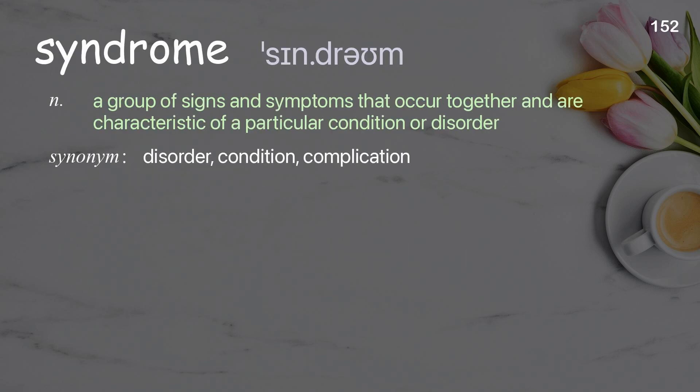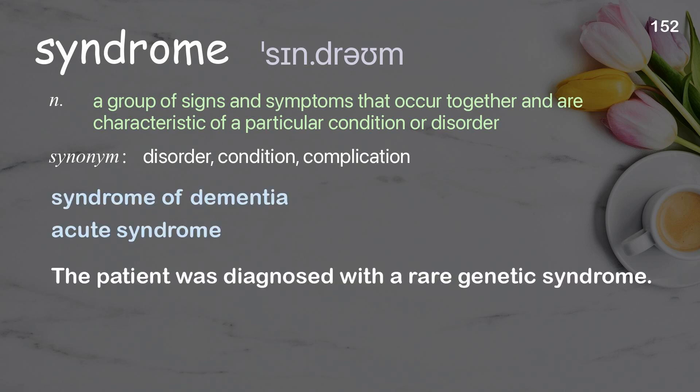Syndrome: a group of signs and symptoms that occur together and are characteristic of a particular condition or disorder. Examples: syndrome of dementia, acute syndrome. The patient was diagnosed with a rare genetic syndrome.